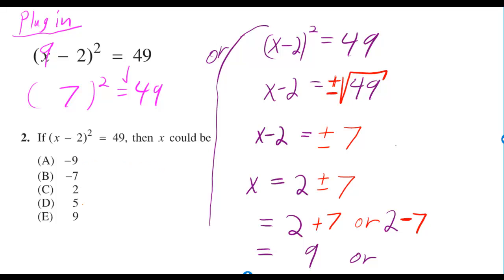If you plug in all the answer choices, you'll eventually realize that 9 works, because when you do 9 minus 2 squared, that gives you 7 squared, which is indeed 49. So that's our answer.